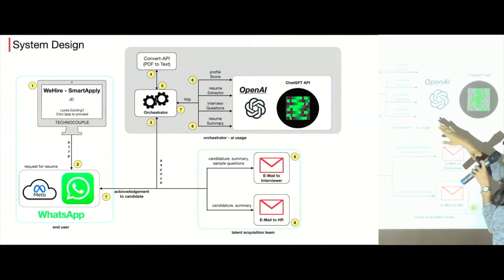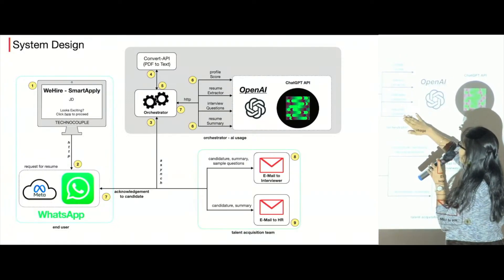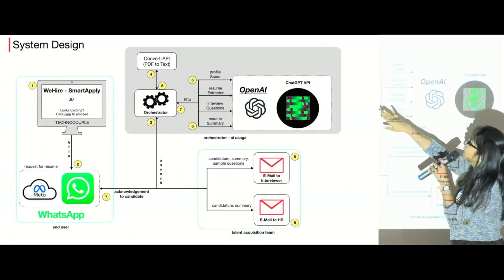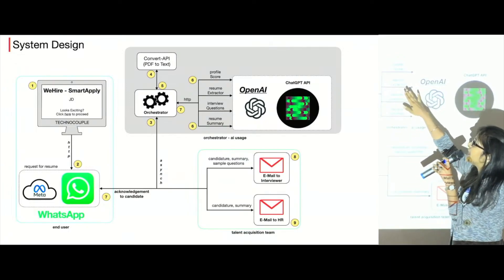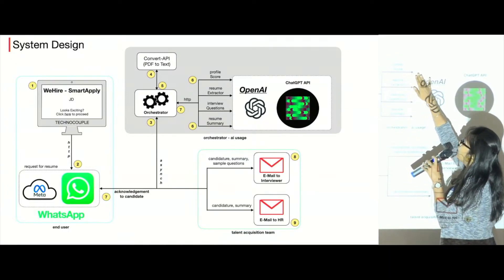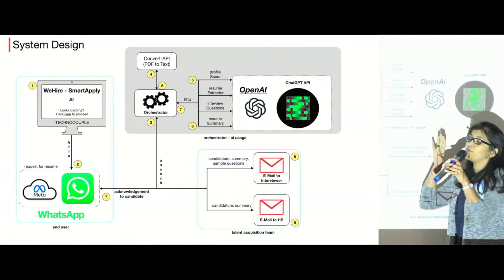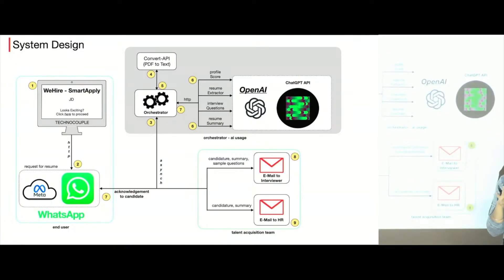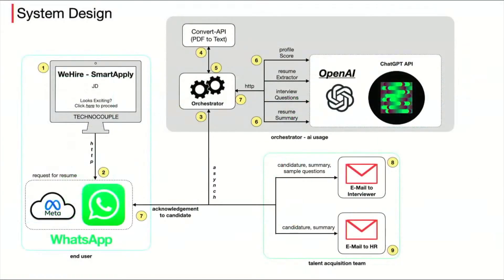And as part of this, you can see these four activities here. So, once you have the resume in text format, we get the profile score, which is the comparison of the candidate's resume against the job description — for example, 6.5 out of 10. There is prompt engineering involved where we ask ChatGPT to provide the score by comparing the candidate's resume against the JD.